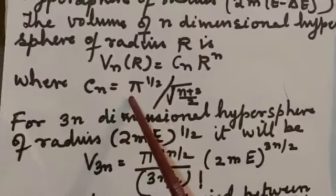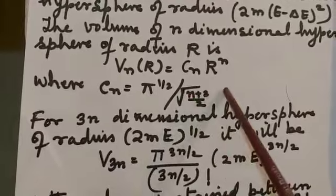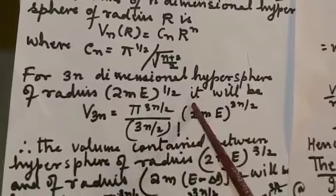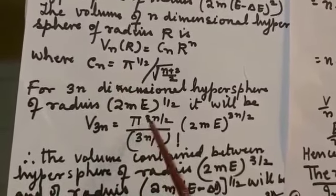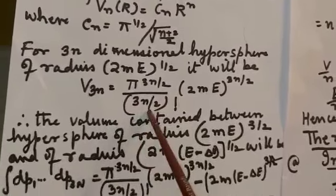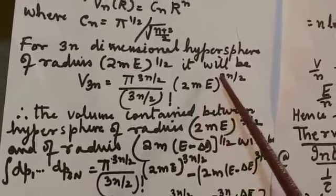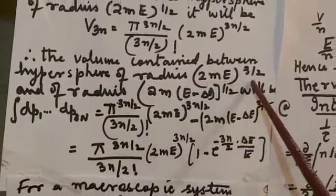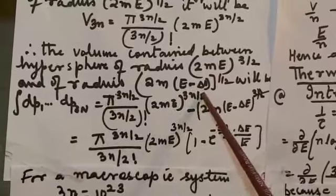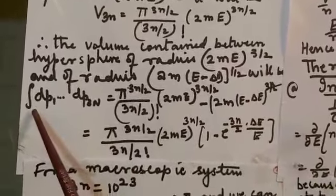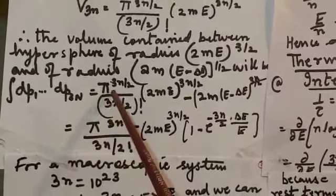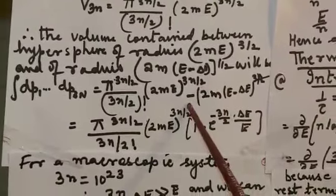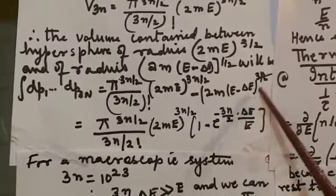Where the constant C_N = pi^(N/2) / Gamma(N/2 + 1). For the 3N-dimensional hypersphere of radius (2mE)^(1/2), it will be V_3N = pi^(3N/2) / (3N/2)! * (2mE)^(3N/2). The volume contained between the two hyperspheres of radii (2mE)^(1/2) and (2m(E minus delta E))^(1/2) is: integral dp1 dp2 ... dp3N = pi^(3N/2) / (3N/2)! * [(2mE)^(3N/2) minus (2m(E minus delta E))^(3N/2)].